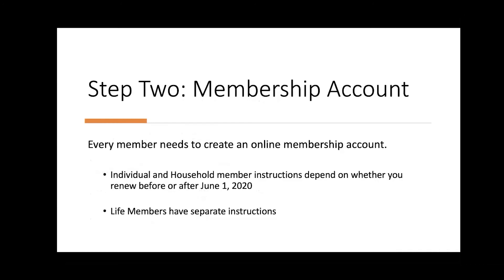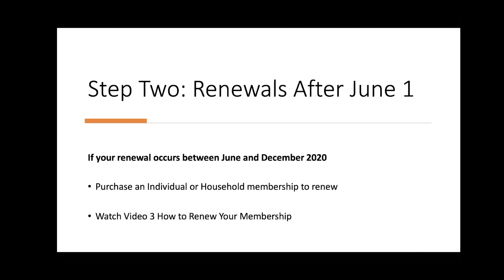Step 2: every member needs to create an online membership account. For individual and household members, your instructions for online account setup will depend on your renewal date. Life members have separate instructions. If your renewal occurs between June and December 2020, you will need to purchase an individual or household membership to renew. Watch video 3 to learn how to do this.